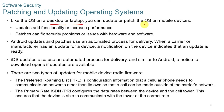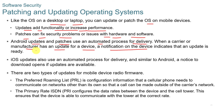Just like desktop and laptop operating systems, mobile devices can be updated or patched. Updates add functionality or adjust performance, and patches can fix security problems or issues with hardware and software. Android updates and patches use an automated delivery process — when a carrier or manufacturer has an update, a notification pops up on the device. iOS updates also use an automated process. There are two types of radio firmware updates: the Preferred Roaming List (PRL), which provides configuration information a phone needs to communicate on networks, and the Primary Rate ISDN (PRI), which configures data rates between the device and the cell tower.